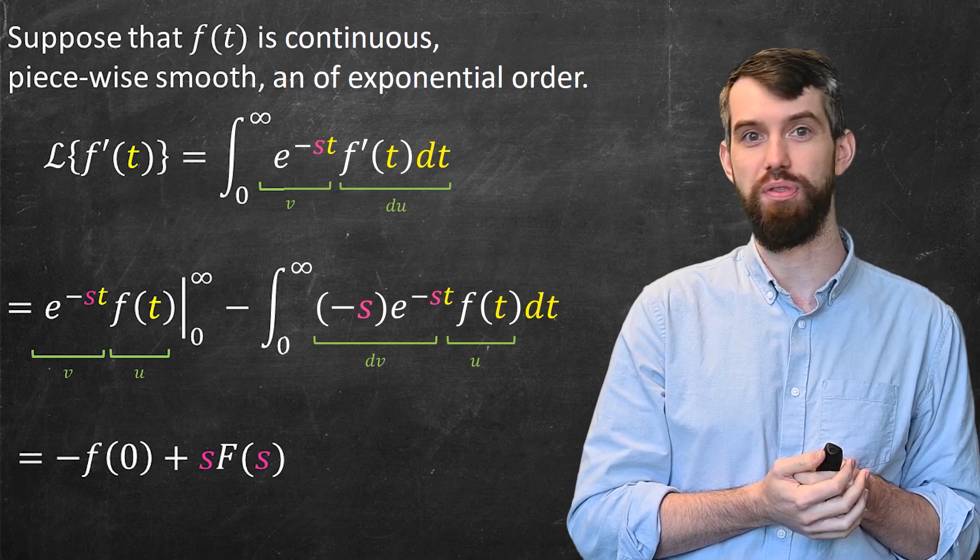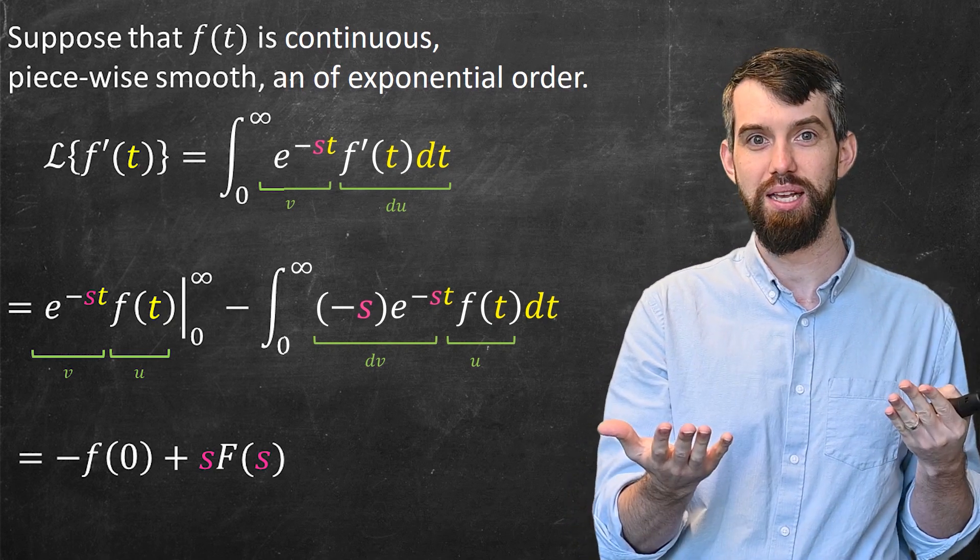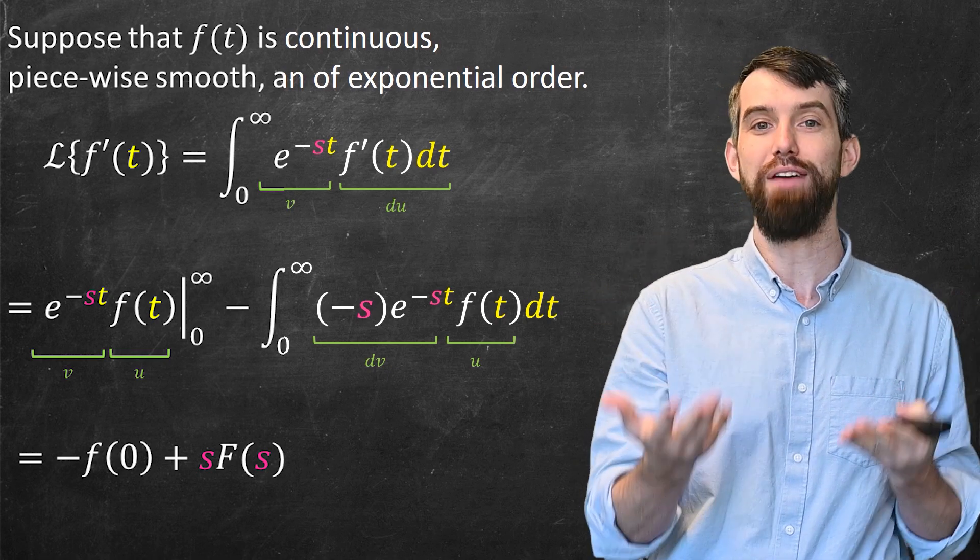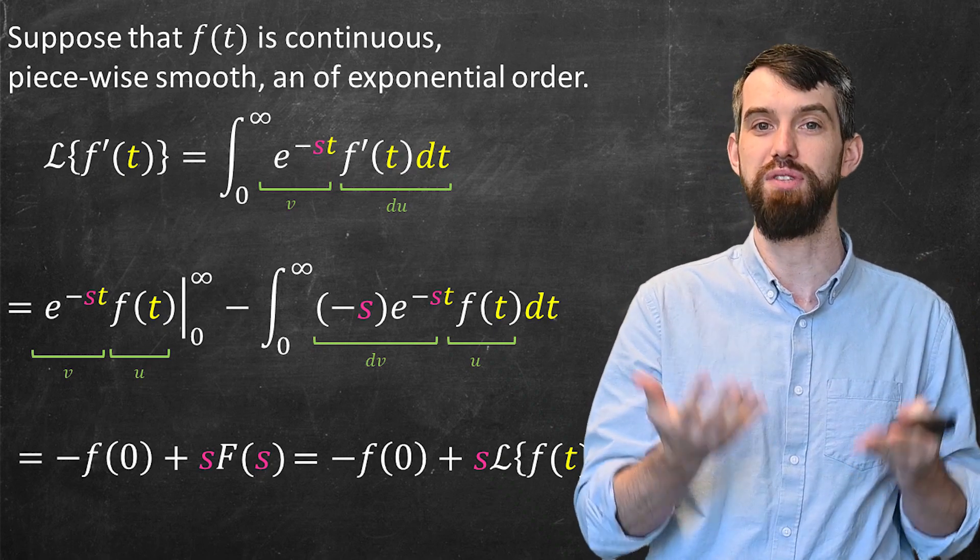You see that there's an s sticking out there, and the two negatives come together to make a positive. Then everything else that remains, that is just the capital F(s). Or, written a different way, this is just the Laplace transform of f(t).